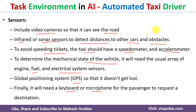This is how task environment in artificial intelligence looks like. There are mainly four components: performance, environment, actuators, and sensors. I have discussed all four components with the help of the automated taxi driver example. If you like the video, do like and share with your friends. Press the subscribe button for more videos and the bell icon for regular updates. Thank you for watching.